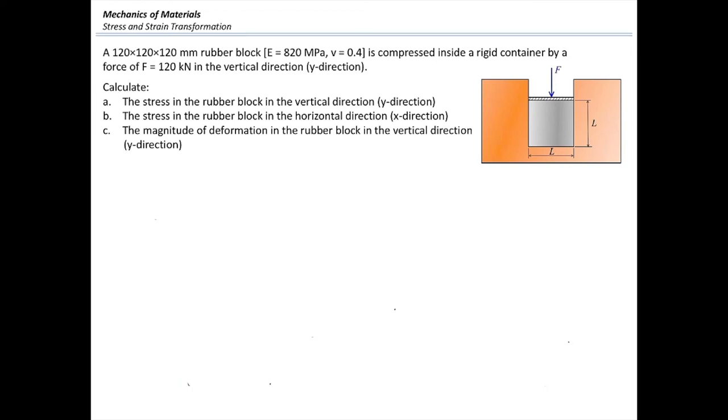In this problem, there is a rubber block with a dimension of 120 by 120 by 120 mm with a modulus of elasticity of 820 MPa and a Poisson's ratio of 0.4.